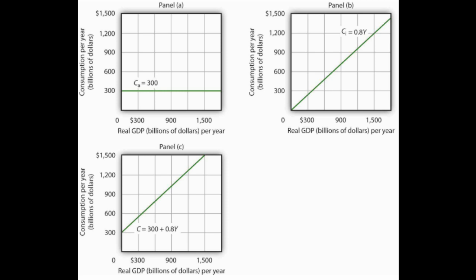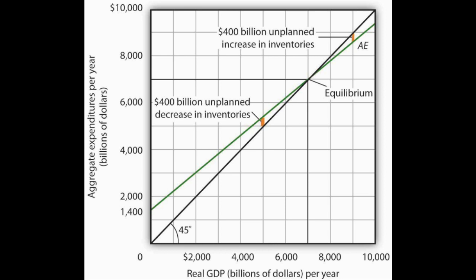Just like the ASAD model, there is an equilibrium point in the AE model. We draw a 45-degree line through the middle of the graph, which shows all the points where aggregate expenditures and real GDP are equal. Where this 45-degree line intersects with the AE curve is where the model is at equilibrium — where aggregate expenditures equal real GDP, and therefore where planned investments equal actual investments, meaning unplanned investments are zero.